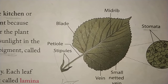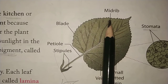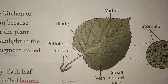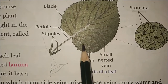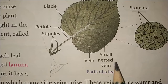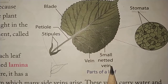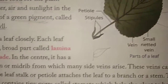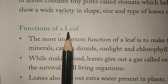The leaf also has a margin, which we can call the leaf margin or leaf border. The smaller veins branch off from the mid-rib and spread across the leaf, distributing water and nutrients to all parts of the leaf.